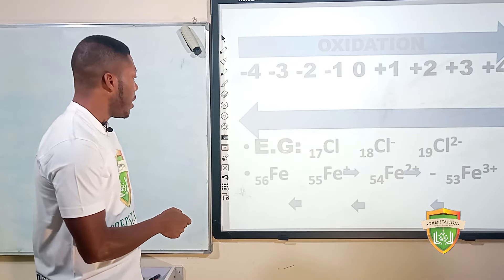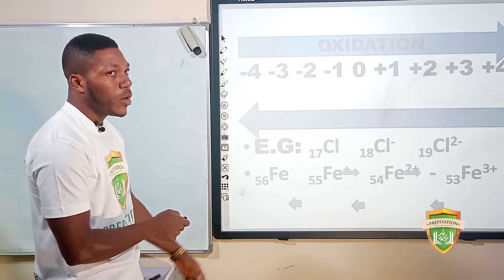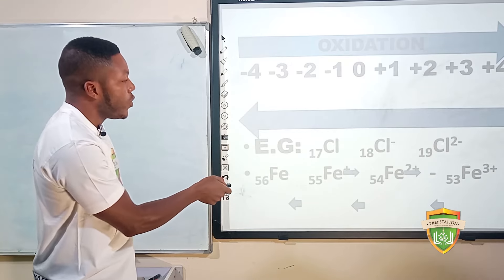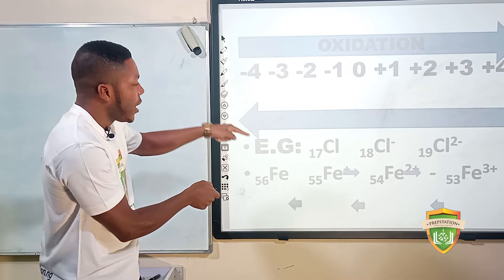For example, chlorine has an atomic number of 17. Moving from Cl to Cl⁻ means one extra electron has been gained. Moving from Cl to Cl²⁻ means two extra electrons have been attracted. Going from 17 electrons to 18, then to having two extra electrons, means this process is reduction because there is an increase in electrons — chlorine gains electrons.